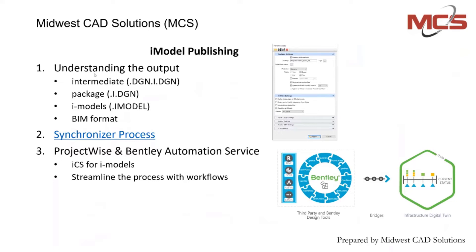For instance, where do you want to put the outbound iModel? What do you want to do with the intermediate files? Intermediate files are generated per reference attachment. Then you have your package file — your .iDGN file — and then you have your .imodel file, which contains all of the artifacts generated from those prior pieces: intermediate, package, and so forth.